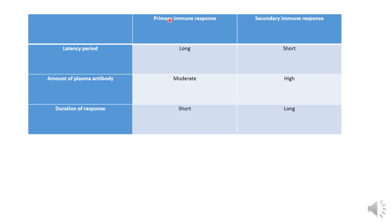This table shows the differences between the primary immune response — against the first infection — and the secondary immune response — against a second infection by the same pathogen. The latency period is the time needed for B and T lymphocytes to start working. In the primary immune response it is long, whereas in the secondary immune response it is short, due to the presence of memory cells.